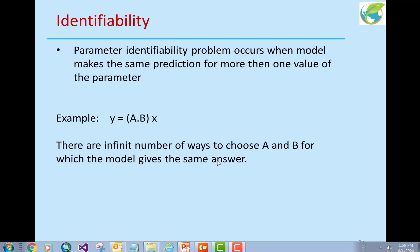for which the model gives the same answer. A could be one, B could be one, giving y equals x. A could be two, B could be one half, the same thing. A could be three, B could be one third, again the same thing. So there are many ways that A and B can change and I get the same answer. I cannot identify what A is and what B is.